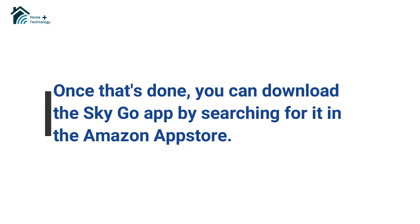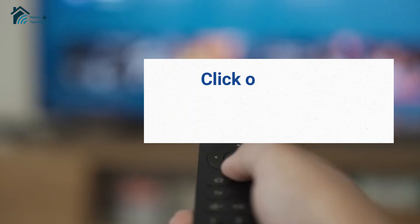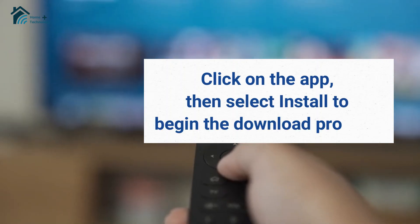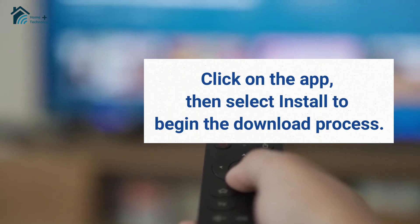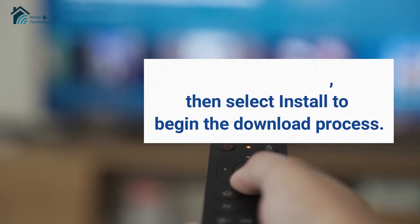Once that's done, you can download the SkyGo app by searching for it in the Amazon App Store. Click on the app, then select install to begin the download process.